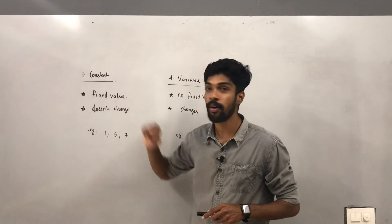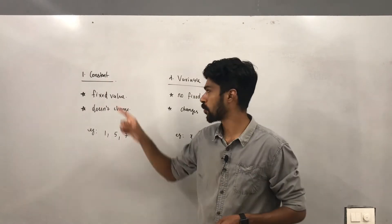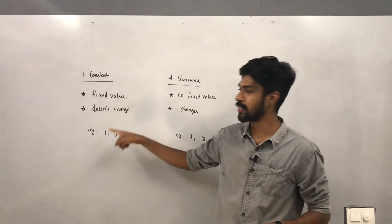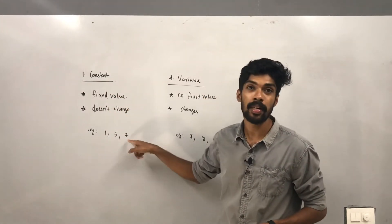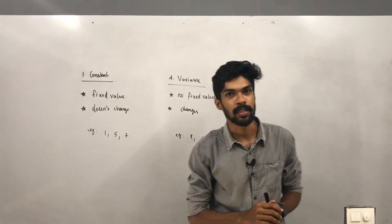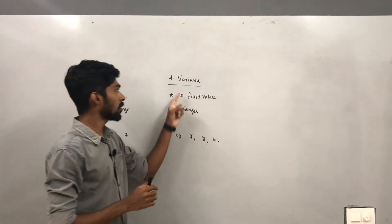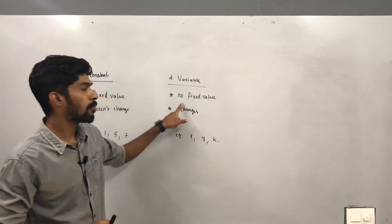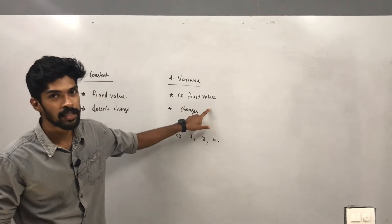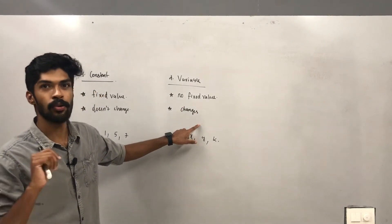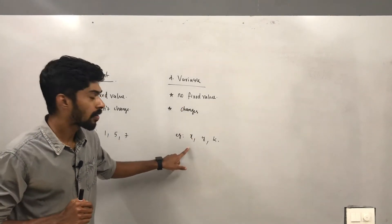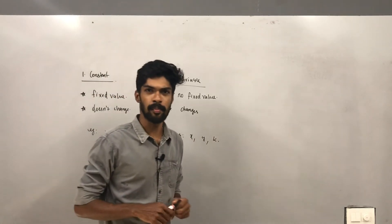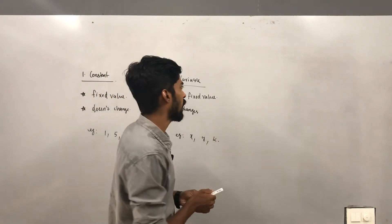So to summarize: the first thing is constant — a constant has a fixed value that does not change, and numbers are examples of constants. The second thing is variable — a variable has no fixed value and it changes accordingly. Examples of variables are x, y, z.